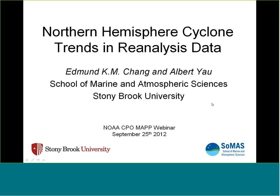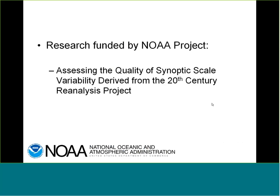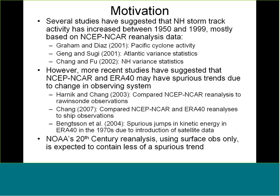Today I'm going to talk about Northern Hemisphere Cyclone Trends in Reanalysis Data, work done with graduate student Albert Yao. This research is funded by a project assessing the quality of synoptic-scale variability derived from the 20th century reanalysis. The motivation is that several studies have suggested that Northern Hemisphere storm track activity increased between 1950 and 1990, but most are based on NCEP-NCAR reanalysis data. More recently it's been suggested that NCEP-NCAR and ERA-40 may have spurious trends due to changes in the observing system, especially with the large increase in satellite and aircraft observations during the late 1960s into the 1970s.